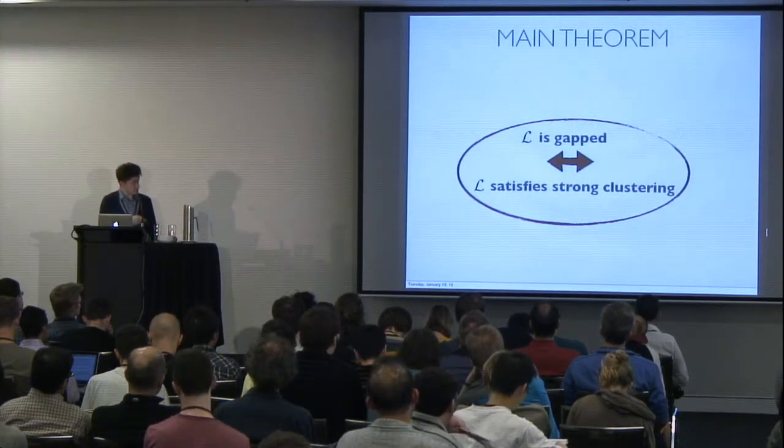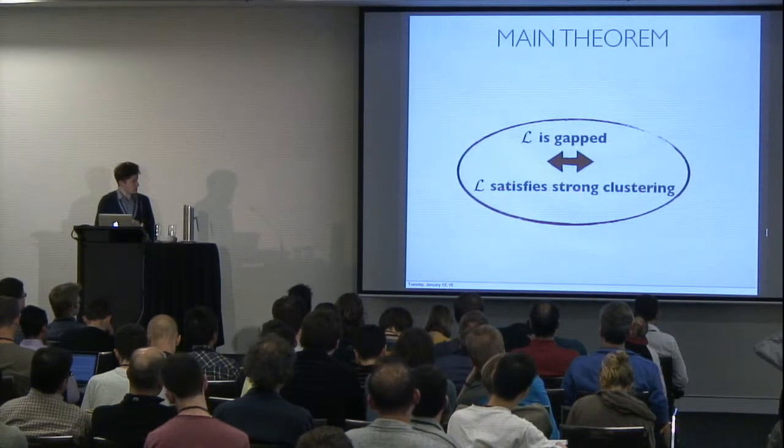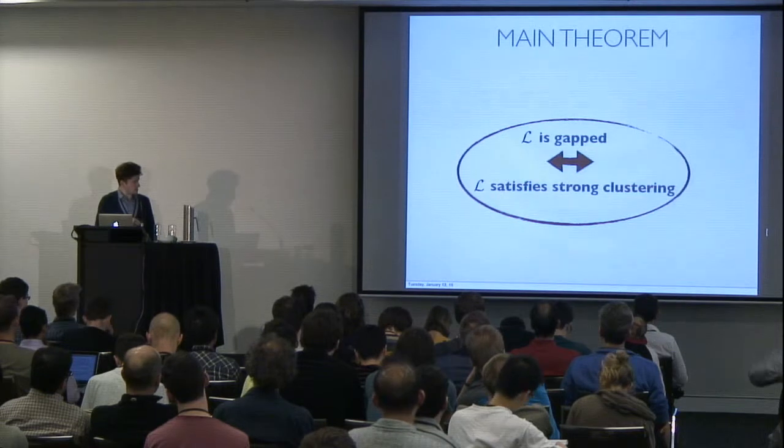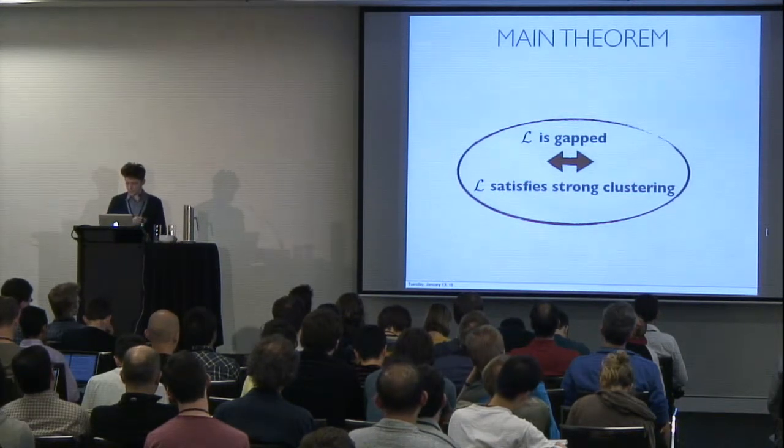then it satisfies, then the Gibbs state that you're driven to satisfies strong clustering. On the other hand, if you know that your Gibbs state satisfies strong clustering, then it's a guarantee that L is gapped, that the Gibbs sampler is gapped.